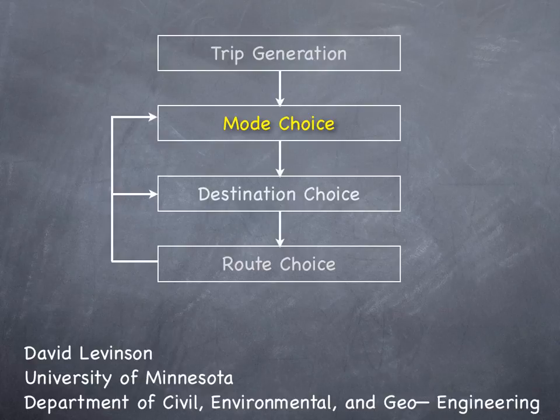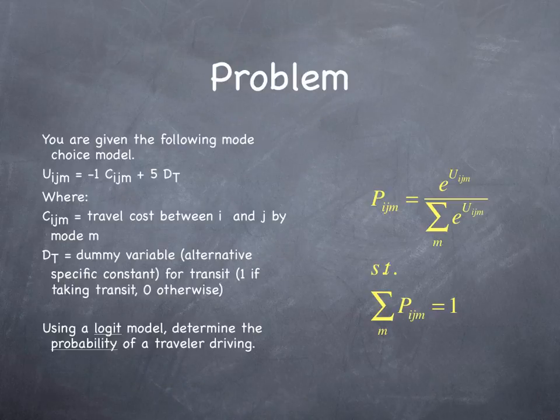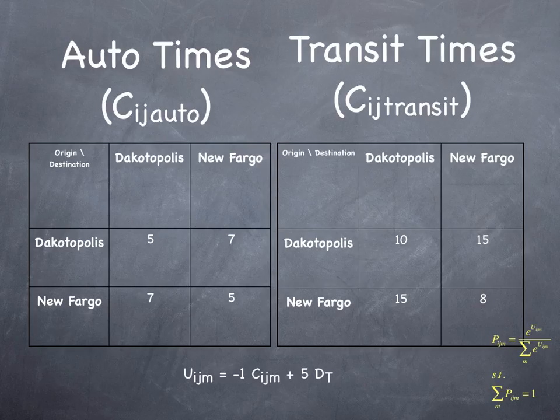In this video, we'll continue looking at mode choice and solve an example problem. You're given the following mode choice model. The utility from i to j by mode m equals minus 1 times the cost of traveling from i to j by mode m, plus 5 if you're taking transit. Use a logit model to determine the probability of a traveler driving when you're given the following travel time matrices.